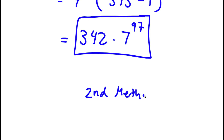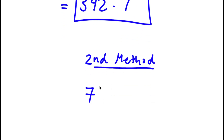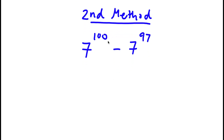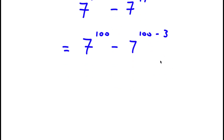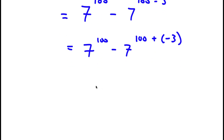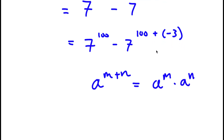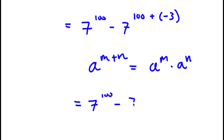Now for a second method of solving this problem, I start again with 7 to the power of 100 minus 7 to the power of 97. Instead of replacing 100 with 97 plus 3, I'm now going to replace 97 with 100 minus 3. So I have 7 to the power of 100 minus 7 to the power of 100 minus 3. I rewrite 100 minus 3 as 100 plus negative 3, and applying the exponent property, that gives 7 to the power of 100 times 7 to the power of negative 3.